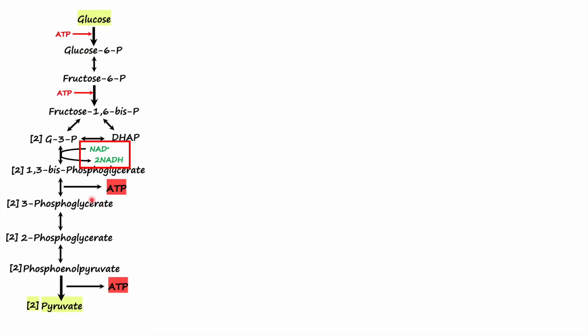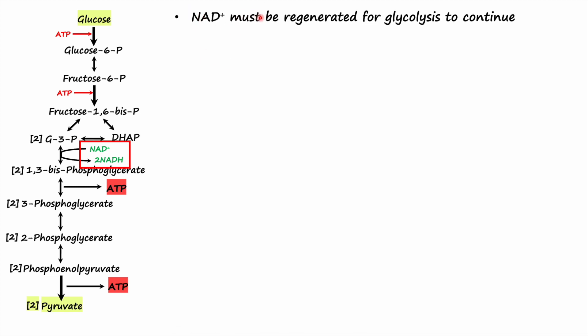During glycolysis, when glyceraldehyde-3-phosphate is converted into 1,3-bisphosphoglycerate with the help of enzyme glyceraldehyde-3-phosphate dehydrogenase, NAD+ is reduced to NADH. If this NADH is not oxidized to regenerate NAD+, the glycolytic pathway would cease to function due to the unavailability of NAD+.